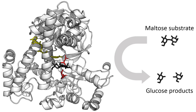Some enzymes do not need additional components to show full activity. Others require non-protein molecules called cofactors to be bound for activity. Cofactors can be either inorganic or organic compounds. These cofactors serve many purposes; for instance, metal ions can help in stabilizing nucleophilic species within the active site. Organic cofactors can be either coenzymes, which are released from the enzyme's active site during the reaction, or prosthetic groups, which are tightly bound to an enzyme. Organic prosthetic groups can be covalently bound, e.g., biotin in enzymes such as pyruvate carboxylase. An example of an enzyme that contains a cofactor is carbonic anhydrase, which contains a zinc cofactor bound as part of its active site. These tightly bound ions or molecules are usually found in the active site and are involved in catalysis.